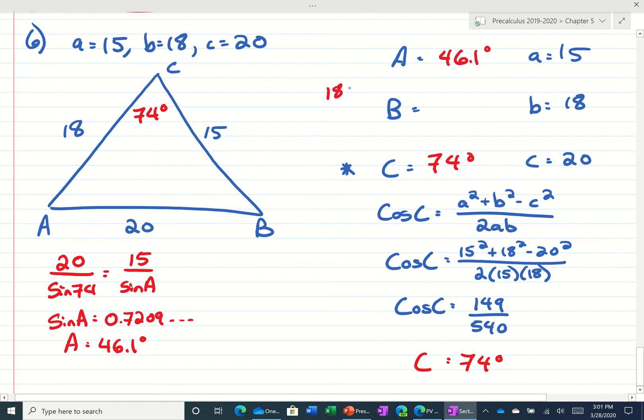And we get angle B, we do 180 minus A and C. 180 minus 46.1, and then minus 74. It comes out to be 59.9. So let's see, largest angle, largest side, smallest angle, smallest side. So that works out.